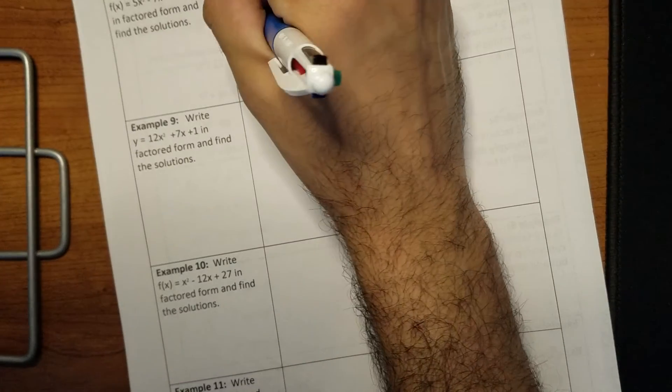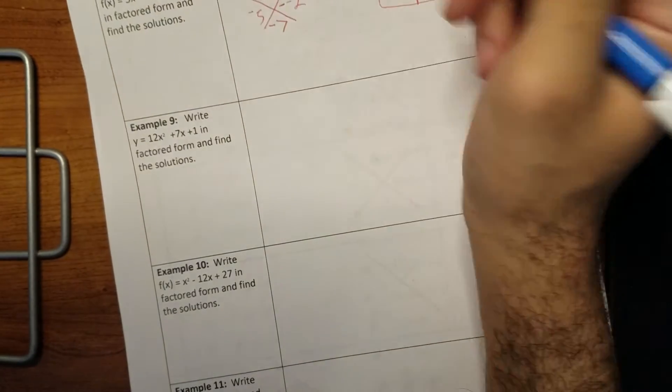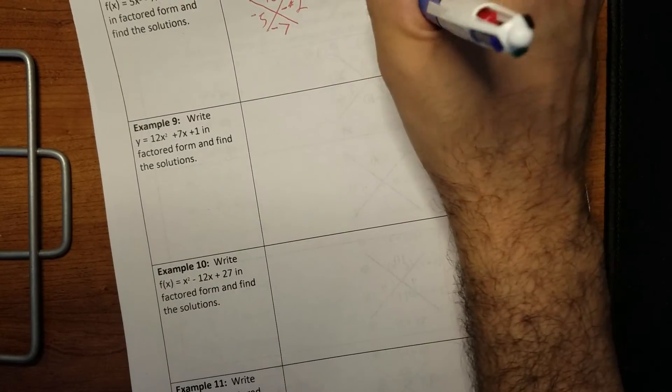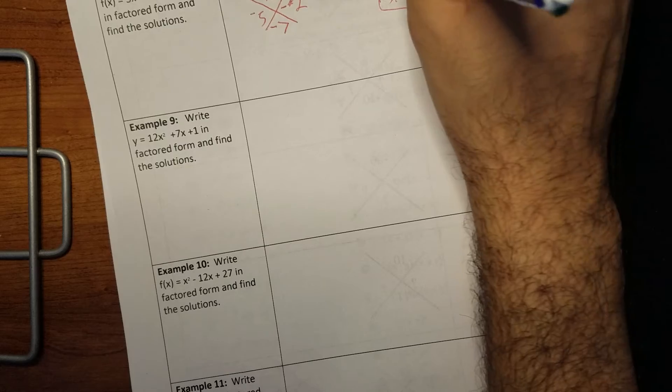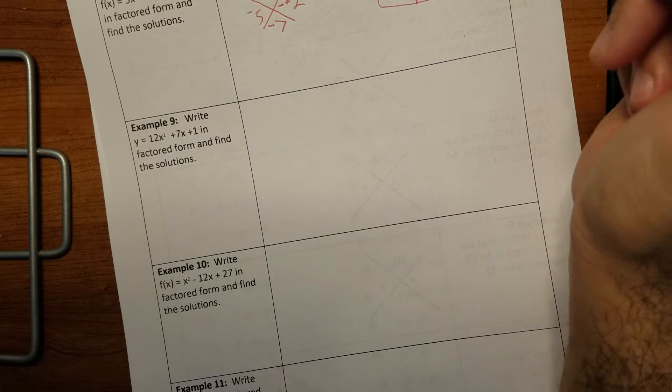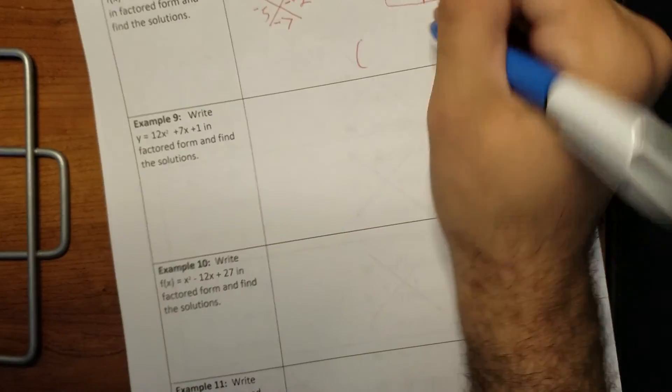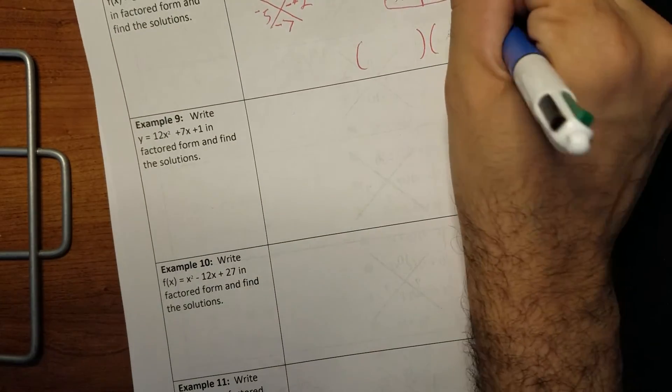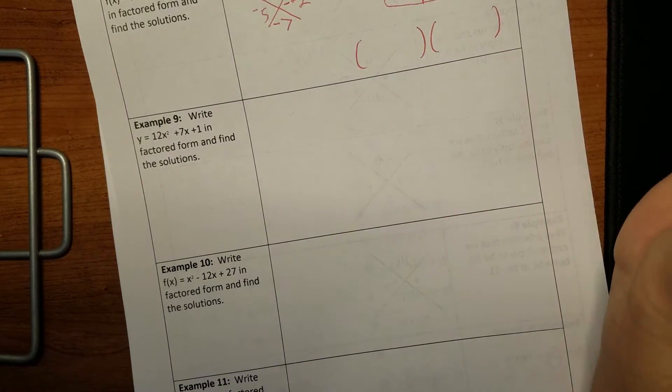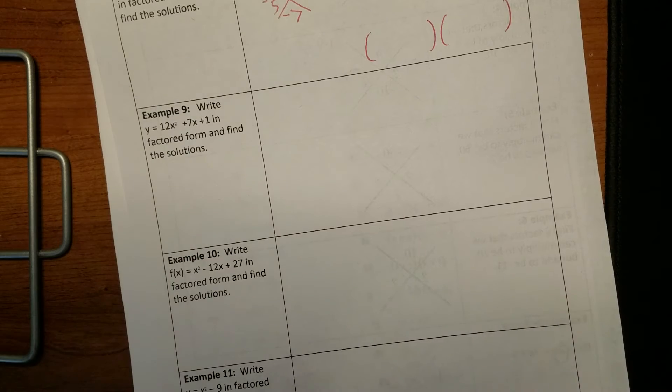Our two numbers, negative five, negative two. Oh, I put two negatives, my bad. So we say negative five X, negative two X. I'll start it off. Make sure you finish it. Okay. Just looking for those two binomials.